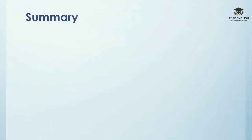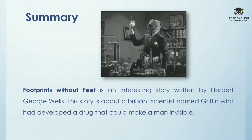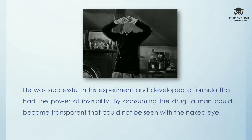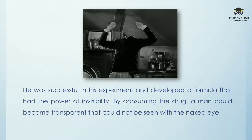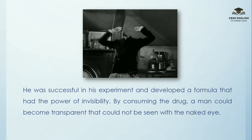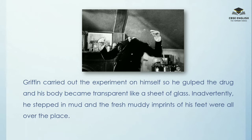Now we'll discuss the summary of this story. Footprints Without Feet is an interesting story written by Herbert George Wells. This story is about a brilliant scientist named Griffin, who had developed a drug that could make a man invisible. He was successful in his experiment and developed a formula that had the power of invisibility. By consuming the drug, a man could become transparent and could not be seen with the naked eye. Griffin carried out the experiment on himself, so he gulped the drug and his body became transparent like a sheet of glass. Inadvertently, he stepped in mud and the fresh, muddy imprints of his feet were all over the place.